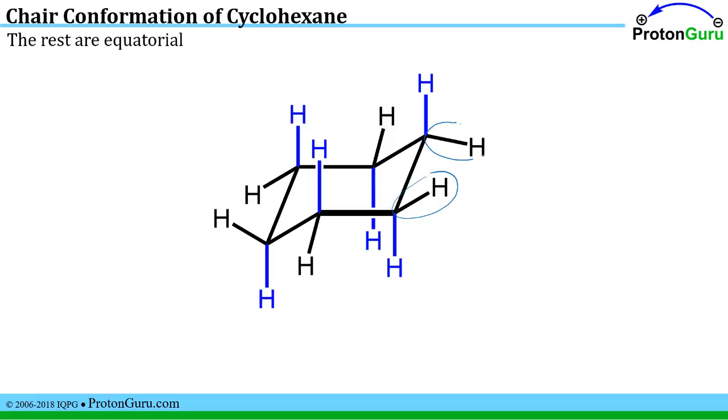All the rest that I've left in black they're not straight up and down, they're kind of angled up, angled down around the ring like these. Well those are all the equatorial hydrogens.